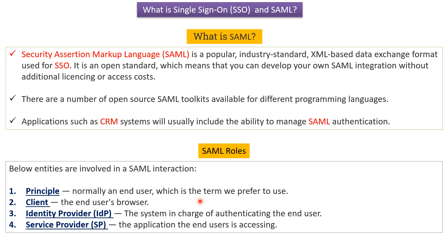The third one is the identity provider, or IDP. This is the system which is in charge of authenticating the end user. The fourth one is the service provider, or SP. The service provider is nothing but the application the end user is accessing.